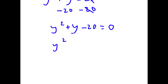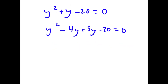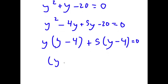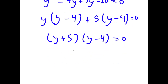To solve this I'm going to factor it. I can rewrite y as negative 4y plus 5y. Factoring by grouping: from y squared minus 4y I factor out y to get y times (y minus 4), and from 5y minus 20 I factor out 5 to get (y minus 4). So I have (y plus 5)(y minus 4) equals 0, meaning y equals negative 5 or y equals 4.